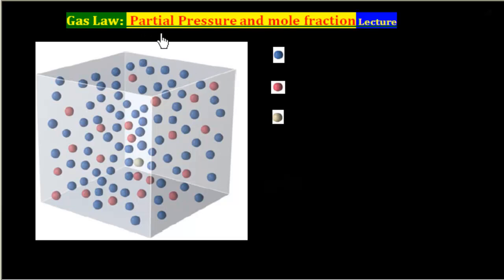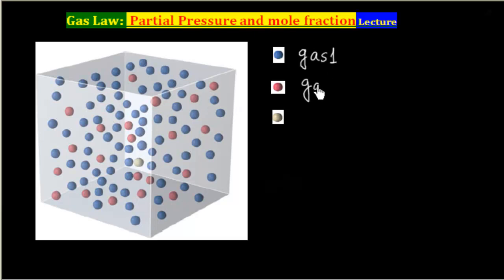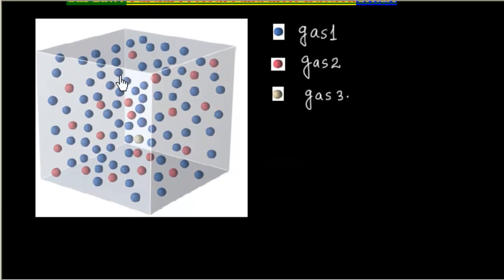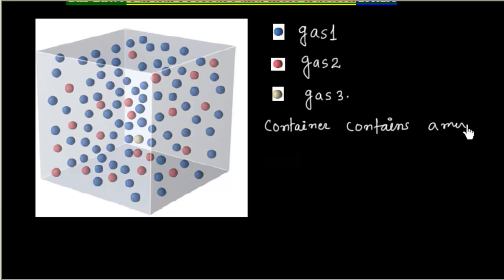Here we will discuss the relationship between partial pressure and mole fraction. Let us say we have a cubical box and this closed container contains different gases. The blue one, let us call this gas 1. Now the red one is a different kind of molecule, so let us call this gas 2. Similarly, these molecules let us call gas 3. So this box contains a mixture of gas molecules.